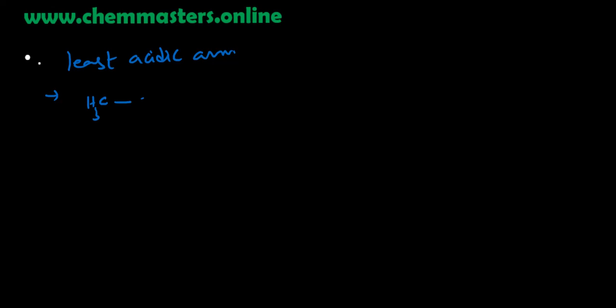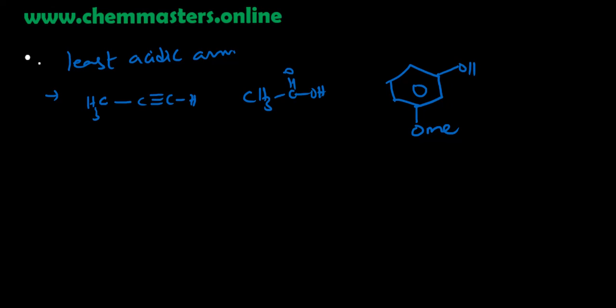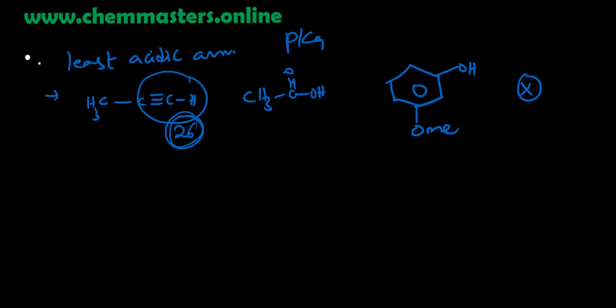The next question asks for the least acidic compound among the given examples. We are given a terminal alkyne (C≡C–H), acetic acid, 3-methoxyphenol, and some other options. The least acidic one is the alkyne — based on pKa values, for the alkyne the pKa is almost 25–26, making it the least acidic.